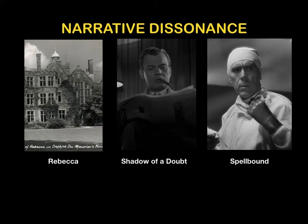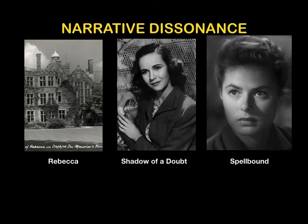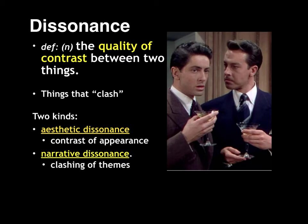If you can recall, Manderley, Uncle Charlie, and Dr. Murchison all seem to possess a majestic, strong exterior, but possess a dark secret that must be unearthed, excavated, and exposed by the forces of good — Mrs. De Winter, Young Charlie, and Dr. Peterson. This quality of contrast that we detect in literature and film is called dissonance, or more specifically, narrative dissonance.